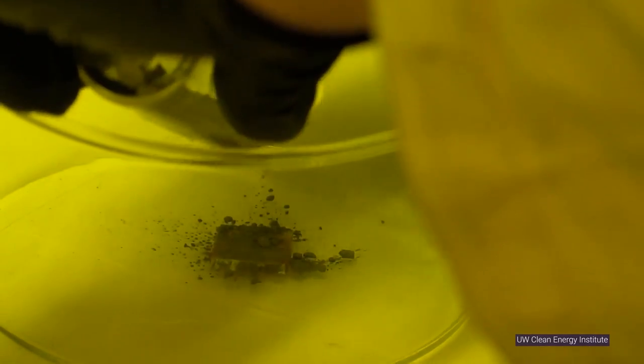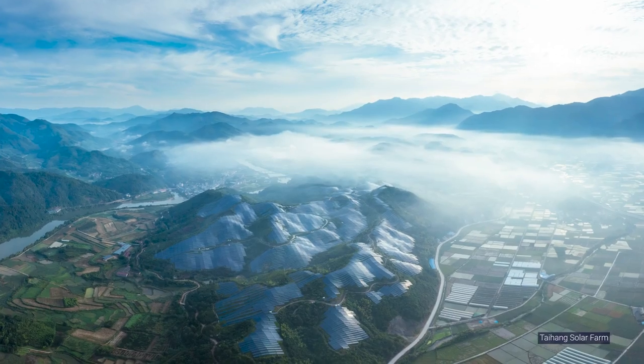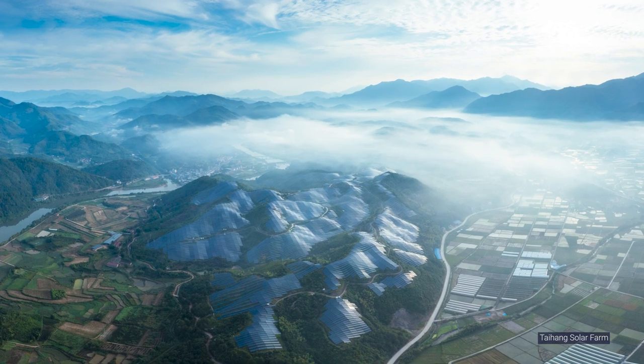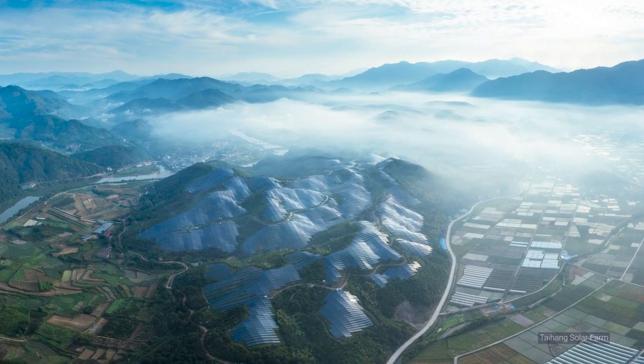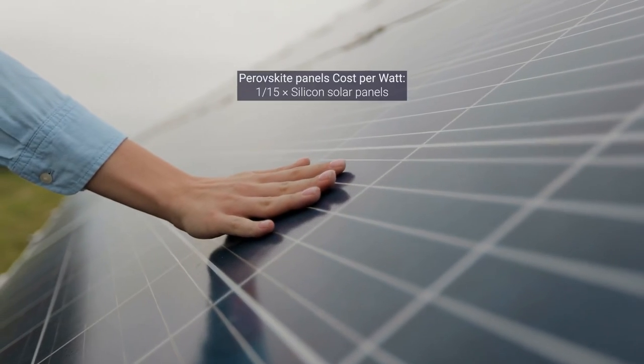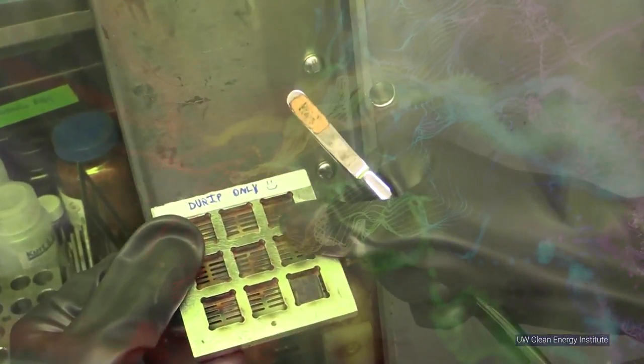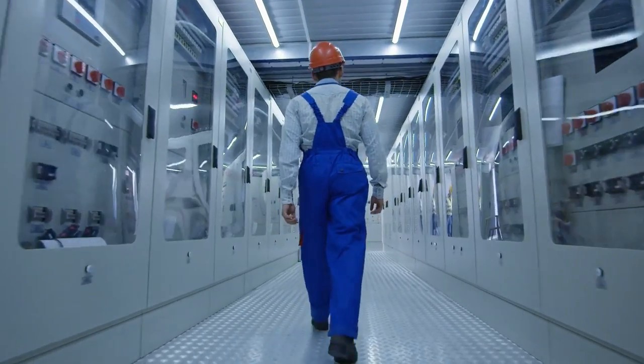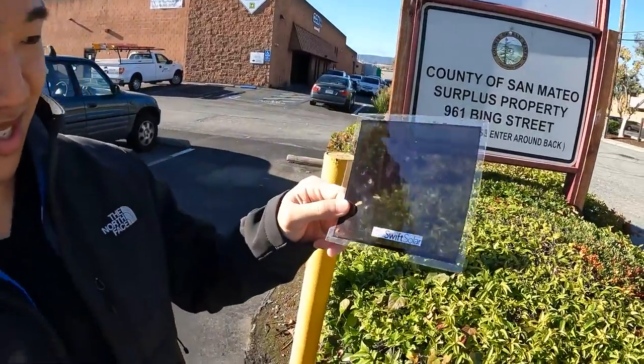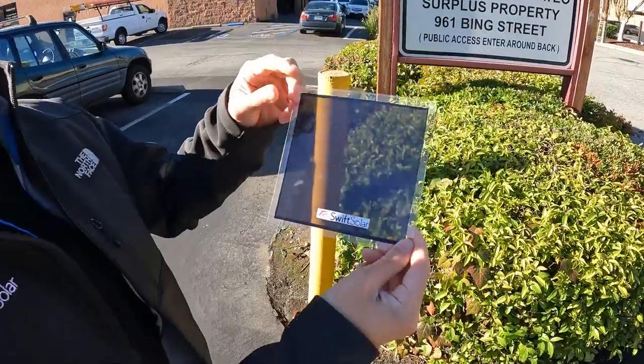The raw materials for perovskites are abundant around the world, and the solar cells can be made using relatively simple manufacturing processes. This means that perovskites can rapidly scale when they're ready for mass-market commercialization. It's estimated that perovskite panels could cost up to 15 times less per watt than modern commercial silicon solar panels. In addition, engineered perovskite materials absorb all parts of the solar spectrum efficiently to produce the highest possible power output, and ultra-thin films open the door to new product formats with unprecedented power-to-weight ratios and high flexibility.